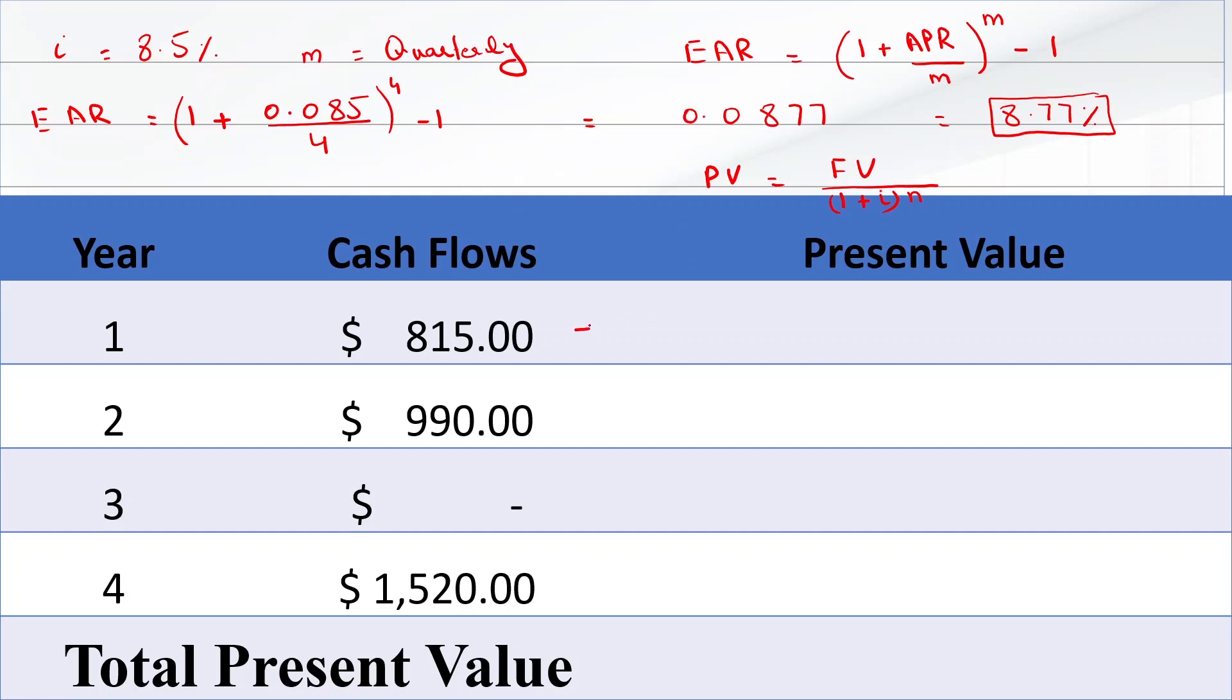For the first year, it will be 815 divided by 1 plus 0.0877 raised to power 1, which equals $749.25.